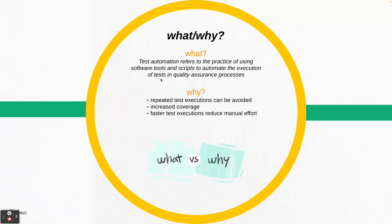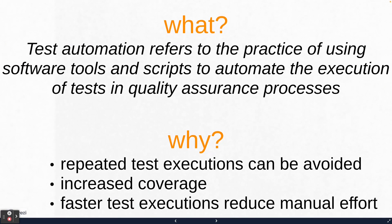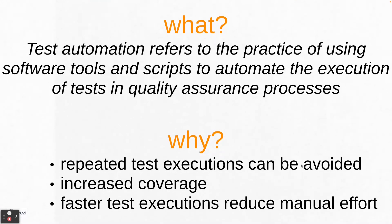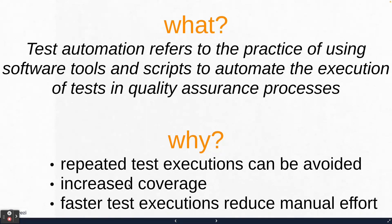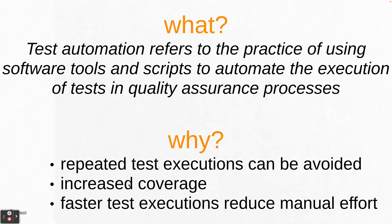The next question is: why? Why was there a need for automation? It is self-explanatory — a lot of things have been automated in the past to save time and resources. Three key points: first, repeated test executions can be avoided — when you have to execute test cases again and again in each sprint, that can be replaced by a machine. Second, increased coverage — the time saved can be used to design more test cases. Third, faster test executions reduce manual effort, as the machine handles multiple test cases in parallel.